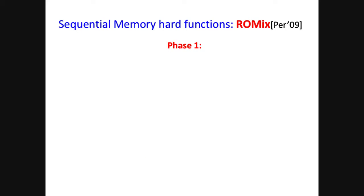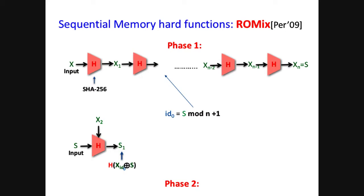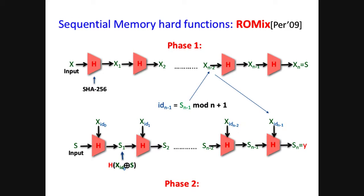The construction of ROMIX consists of two phases, based on a standard random hash function H, which can be implemented by, for example, SHA-256. In the first phase, similar to a typical scheme, we compute N random string labels iteratively, and take the output as input to the second phase. In the second phase, we also compute N random string labels, but to compute a label, we compute a pseudorandom index ID from the previous label—say S—pick the corresponding value X_ID computed in the first phase, and invoke H once to compute the next label, until finally we compute the last label S_N, which is the output of the ROMIX function.